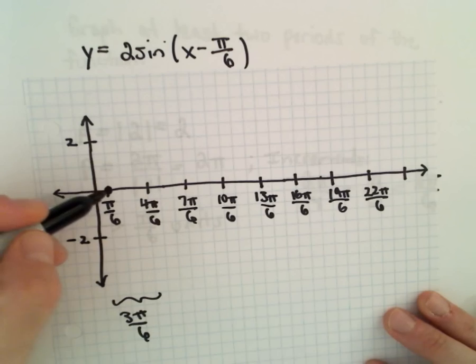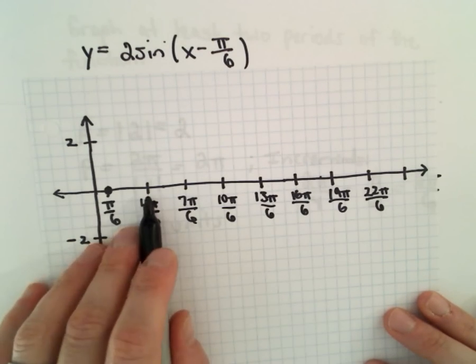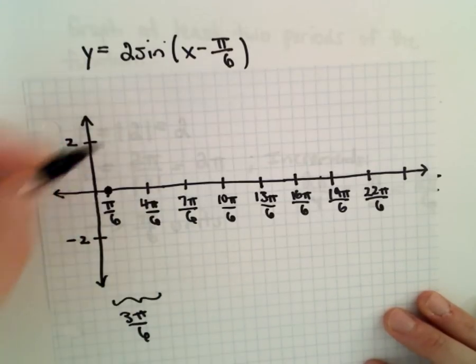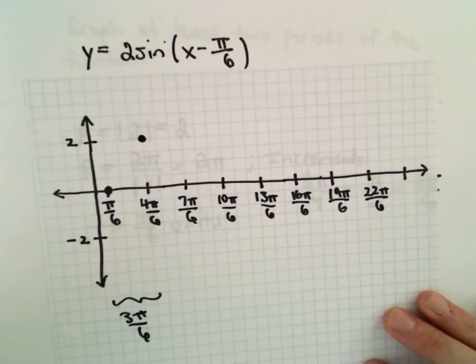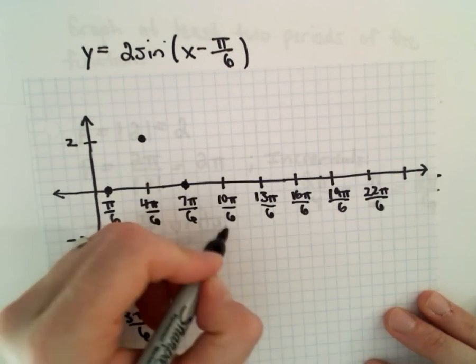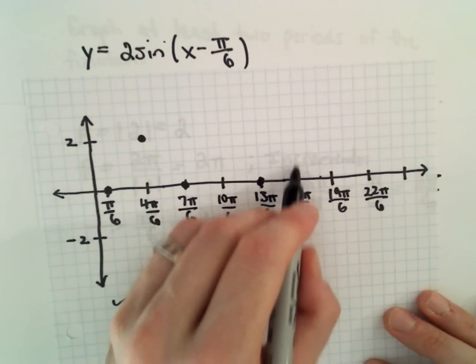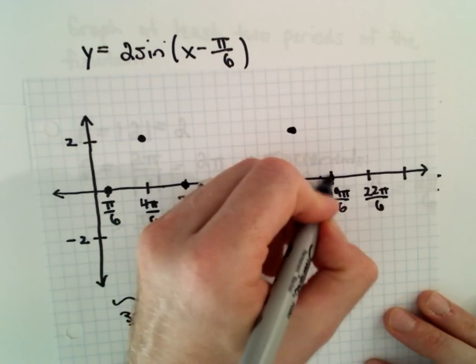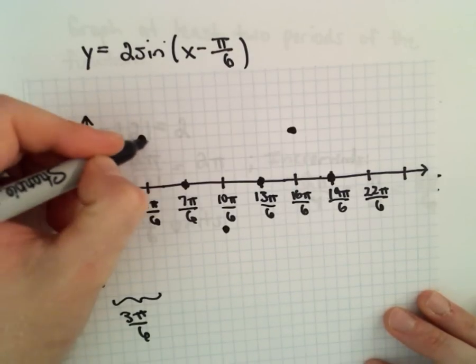Well, at 4 pi over 6, this is why I like to do my increments the way I do. Once I move over one of those increments of pi over 2, or equivalently 3 pi over 6, I'm now going to be up here at my highest value of positive 2. Then I'm going to be back at 0. At 10 pi over 6, I'm going to be at negative 2. And then back to 0, at 16 pi over 6, I'm at positive 2. Back to 0, and I think that's enough for 2 periods.